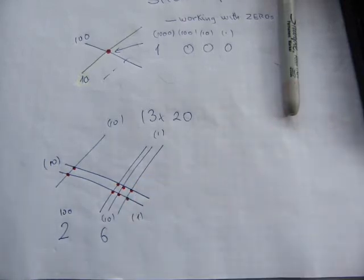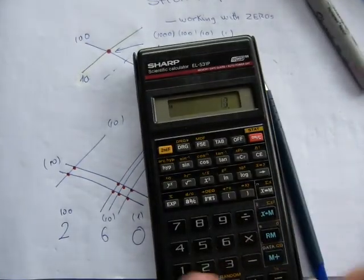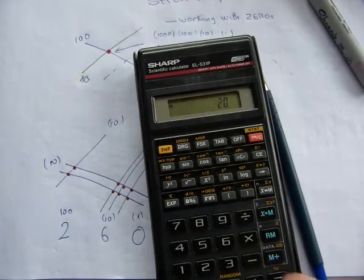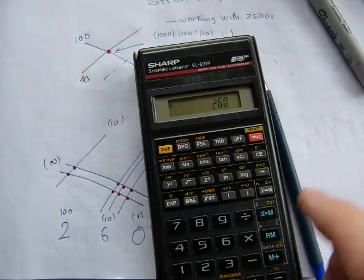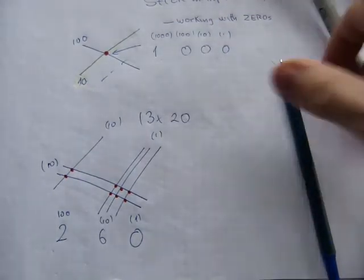Let's check it on calculator: 13 times 20 equals 260. So this is how it works. I'll show you one more with bigger numbers.